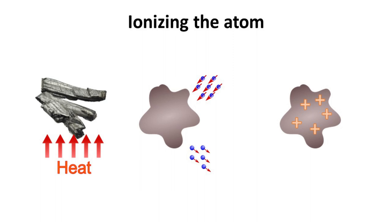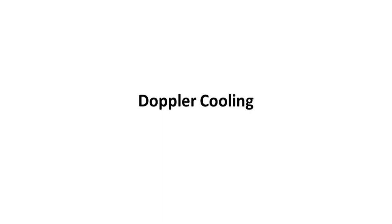This process is called electron ionization and is only one of the many approaches used to create ions. For trapped ion quantum computing, we shall use calcium atoms which are singly charged. Part 2: Doppler Cooling.